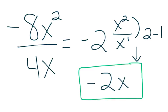Using the same steps as before, you take -8 and divide it by 4, which gives you -2. Then you take x² over x and subtract the exponents, which is 2 minus 1. You get -2x.